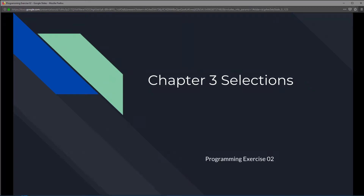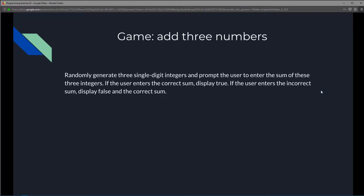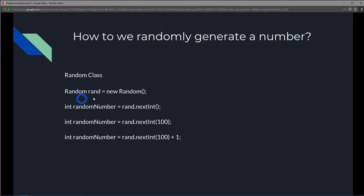This is Chapter 3, Selections, Programming Exercise 2: Add Three Numbers. We're going to randomly generate three single-digit integers and prompt the user to enter the sum of these three integers. If the user enters the correct sum, display true. If the user enters the incorrect sum, display false and the correct sum.